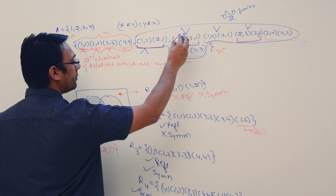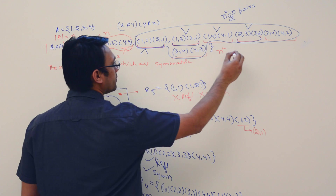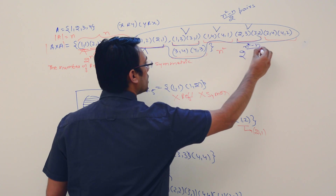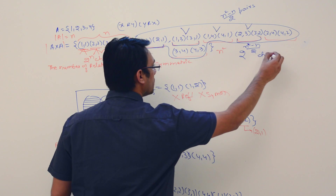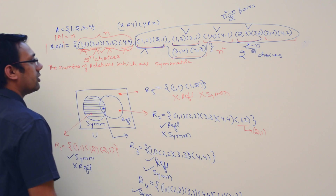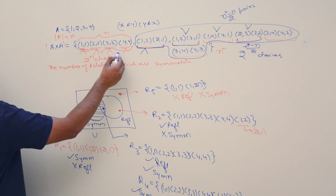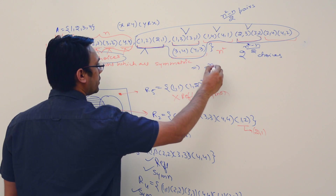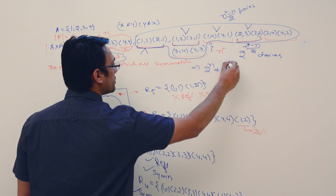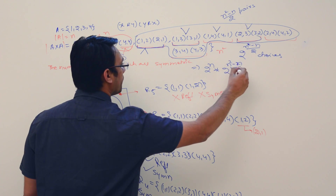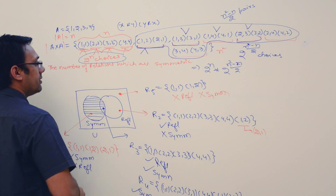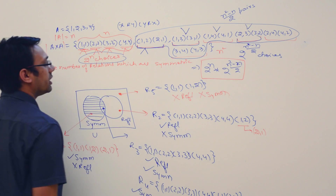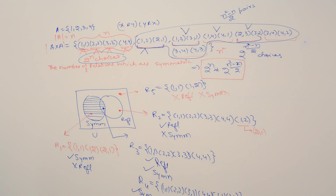For every off-diagonal pair we have two choices — either include it or not. So for all these pairs we have 2 raised to the power (n squared minus n) divided by 2 choices. Combined with the diagonal choices, the total number of symmetric relations is 2 raised to n multiplied by 2 raised to (n squared minus n) divided by 2.